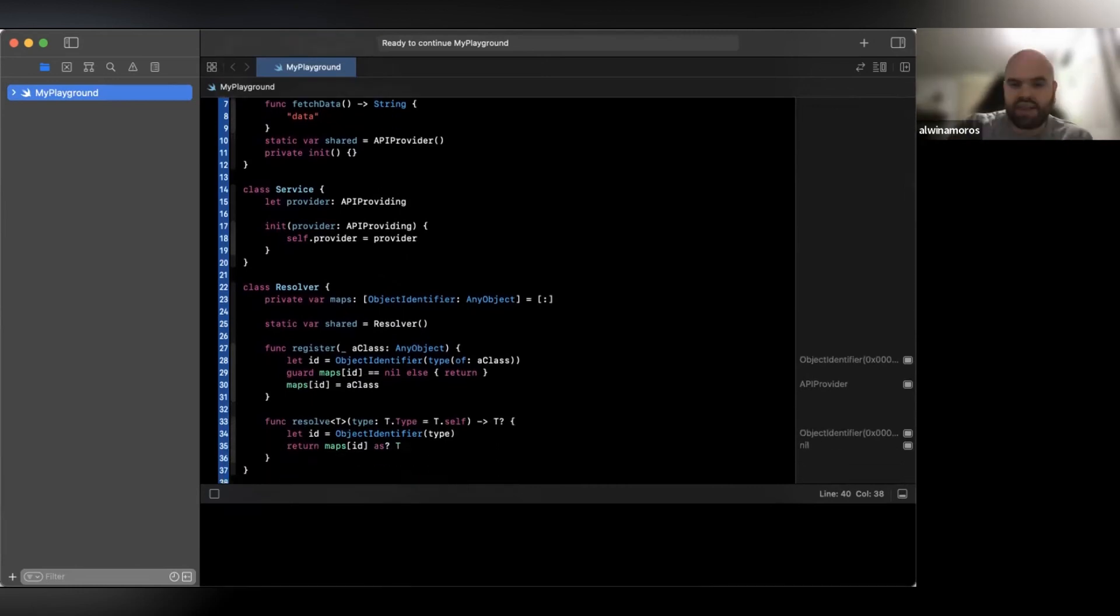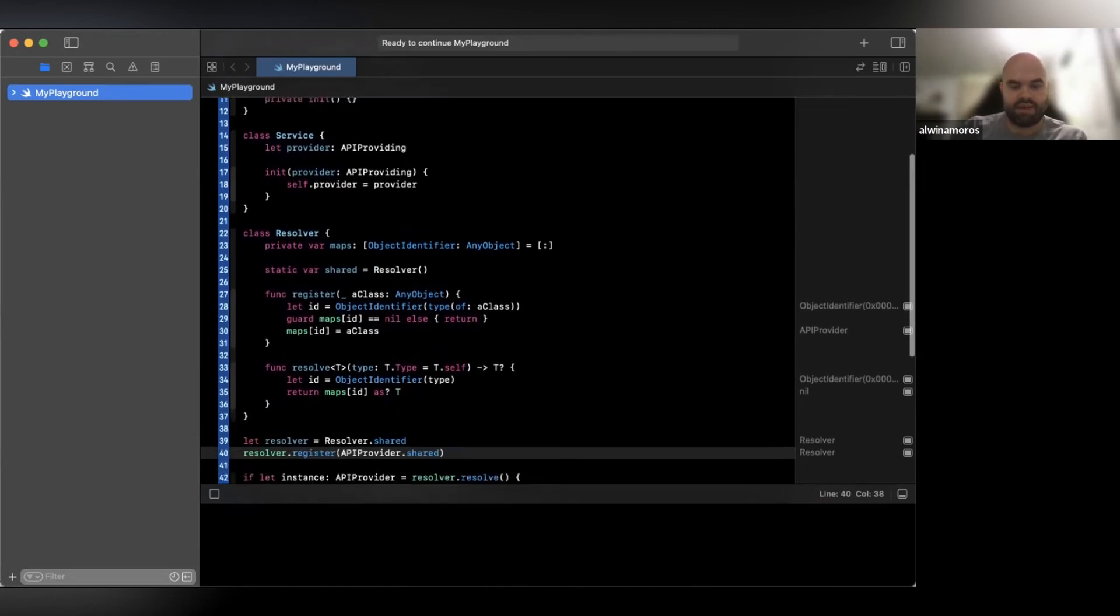It's going to be utilizing API providing, and it's going to get it through the initializer that we have. And for the dependency injection that we're going to be doing, this is the main of the meat that we have for it. Class resolver, we're going to have a variable called maps dictionary, which takes an object identifier and any object.